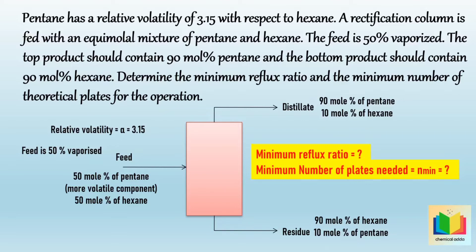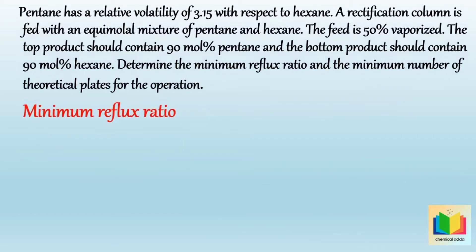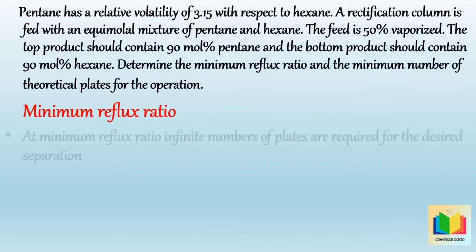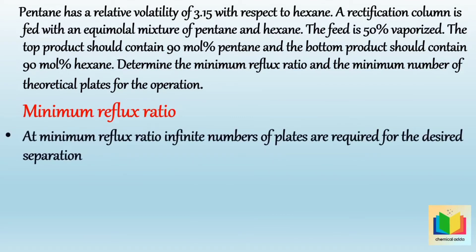First let's understand what the minimum reflux ratio is. At a minimum reflux ratio, infinite numbers of plates are required for the desired separation. The formula for the minimum reflux ratio is: RM equals XD minus Y-dash, divided by Y-dash minus X-dash. Where XD is the mole fraction of the more volatile component in the distillate, Y-dash is the coordinate on the Y-axis of the point of intersection of the operating lines of the rectifying and stripping sections and the feed line.